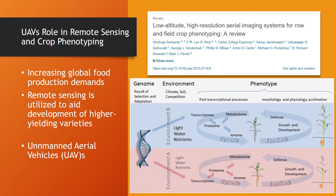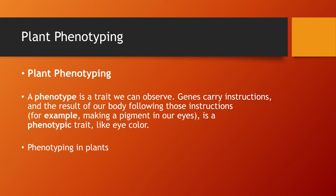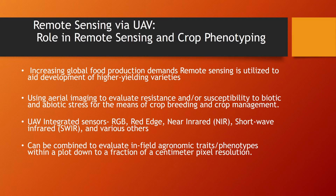UAV's role in remote sensing and precision agriculture is growing. We can all agree that global food demand is expected to double what it is today by 2050. Production environments and natural resources are continuously shrinking and deteriorating. Remote sensing data can be utilized in the development of higher yielding varieties. Plant phenotyping is a rapidly emerging research area concerned with quantitative measurement of structural and functional properties of plants. A phenotype is a trait we can observe, like eye color. UAVs can play a key role in crop phenotyping.